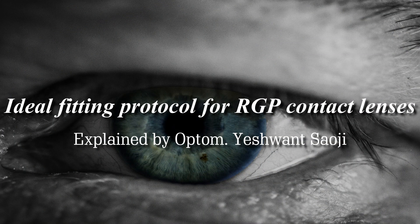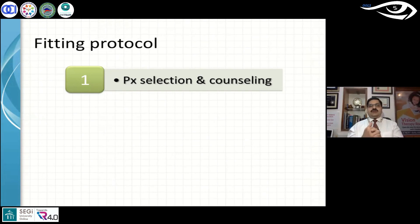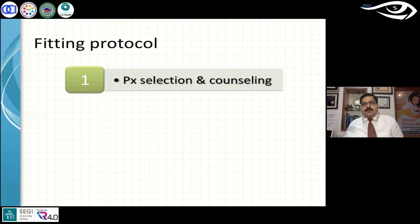Let's understand the fitting protocol. Patient selection is the first step — determining whether a patient is suitable for a rigid material rather than a soft contact lens. Patient selection and counseling is very crucial. One key thing: I would not proceed with the trial unless the patient themselves is ready for it. Frequently the patient is not willing but the parents are more than willing to fit contact lenses, especially in India for marriage reasons. My rule is: until the person who's going to wear the lens is ready, I proceed with the trial, or I keep counseling until they become ready.